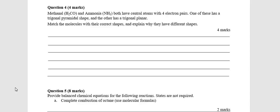Moving on, we have question 4. Methanol - now you don't need to know that this is called methanol just yet. So this is the formula. Ammonia both have central atoms with four electron pairs. One of these has a trigonal pyramidal shape and the other has a trigonal planar shape. Match the molecule with the correct shapes and explain why they have different shapes.